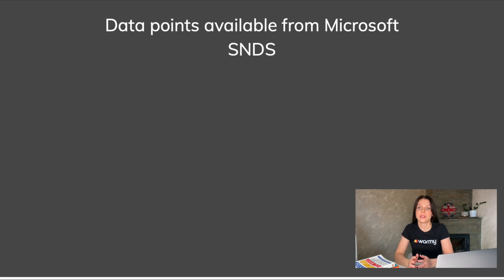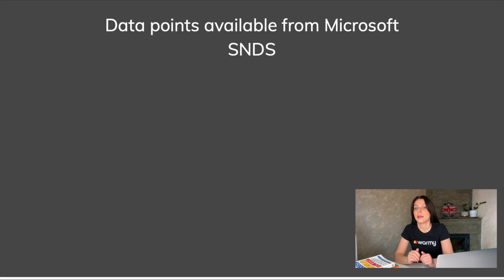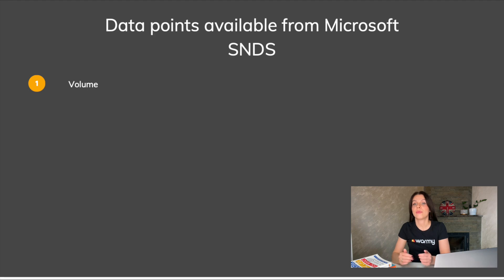Data points available for Microsoft SNDS. Microsoft SNDS provides email senders with several data points to help monitor and improve their email deliverability to Outlook and other Microsoft email services. Here are some of the key data points available. Volume: the volume data point shows the number of messages sent to Microsoft email services from the registered IP addresses or domains. This data can help email senders track their email volume over time and identify any sudden spikes or drops in volume that could affect email deliverability.